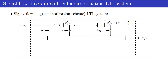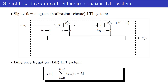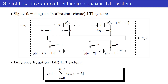The figure shows a basic LTI system, which can be described by the given difference equation with coefficients b0 until b(N−1). The LTI system considered in this video can also contain feedback loops, which changes the difference equation accordingly. The coefficients a1 until a(N−1) are used for the feedback path. As we can see from the signal flow graph, the basic building blocks of an LTI system are multipliers, delays, and adders.